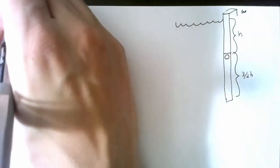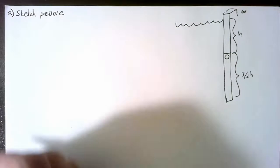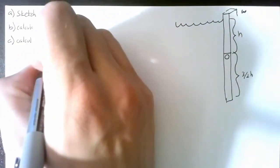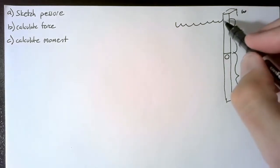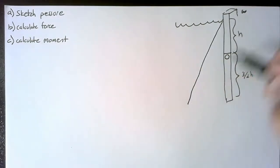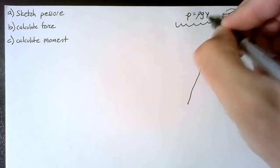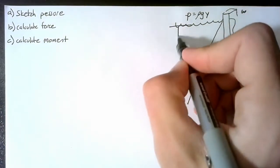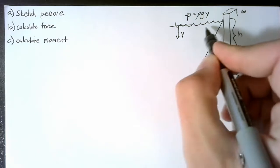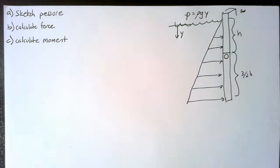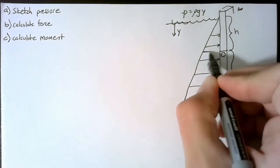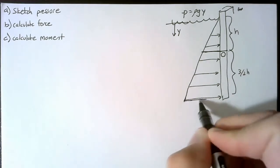We needed to do three things. First, we needed to sketch the pressure. Second, we needed to calculate our force, and finally we need to calculate our moments. The pressure sketching doesn't change. We have some pressure that's equal to rho g y, where y is defined downward from the surface of the water.